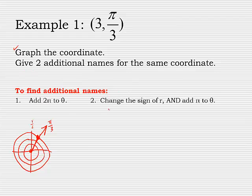Give two additional names for the same coordinate. Alright, so here's my coordinate. That's a 3. Two ways to do this to find a new name.